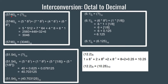Suppose we have 5746 octal and want to convert it into decimal. The positional weight of 6 is 0, so we have 6 into 8 to the power 0. Positional weight of 4 is 1, so 4 into 8 to the power 1. Similarly, 7 into 8 squared and 5 into 8 cubed. This gives 5 into 512, 7 into 64, 4 into 8, and 6 into 1. Upon addition the final value is 3046. Therefore 5746 octal is equivalent to 3046 in decimal.